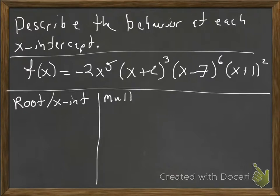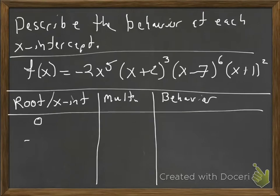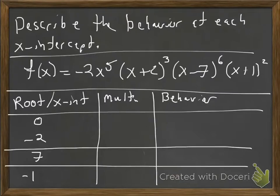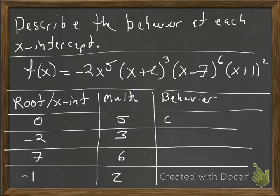So we're going to find the root, which is the same thing as the x-intercept. We're going to talk about its multiplicity, and then its behavior. So we've got 0, negative 2, 7, and negative 1. Those are our roots. And then the exponent on those factors is going to be the multiplicity. So the 0 has a 5, negative 2 has a 3, the 7 has a 6, and the negative 1 has a 2.